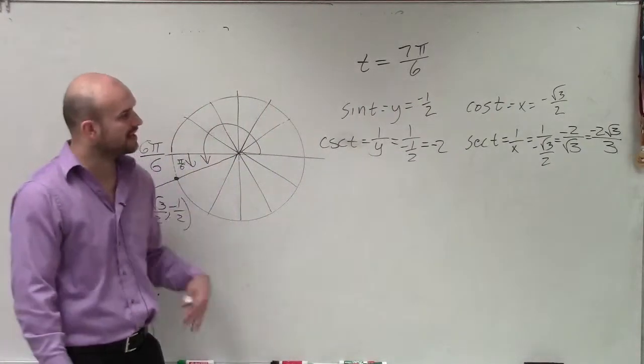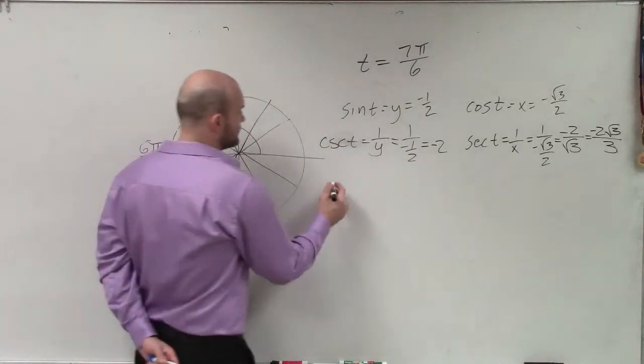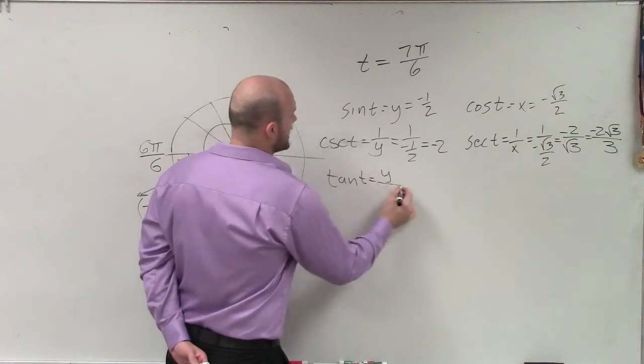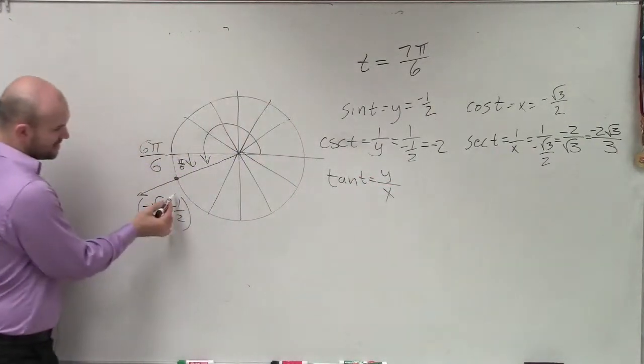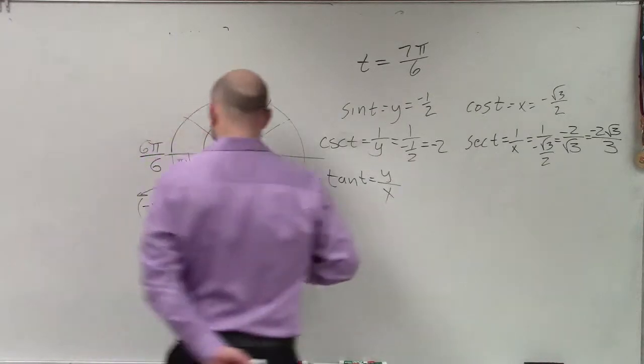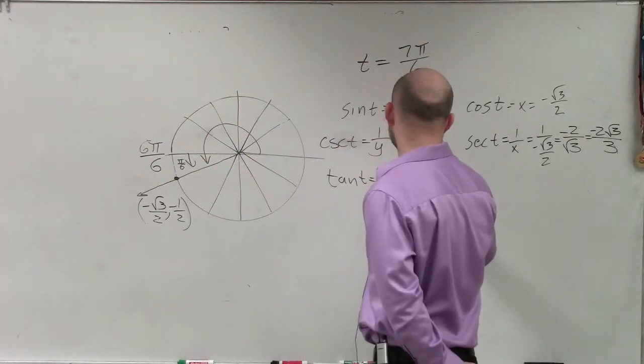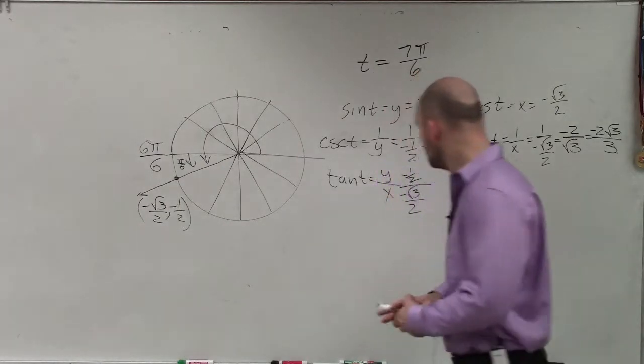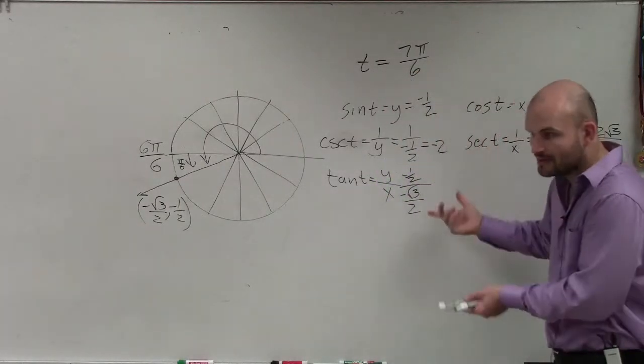Again, I've already gone through a lot of this algebra, so I'm just going to kind of quickly go through it. Tangent of t represents your y over your x. So in this case, I take the y coordinate divided by the x coordinate. So therefore, I'll have negative 1 half divided by negative square root of 3 over 2.